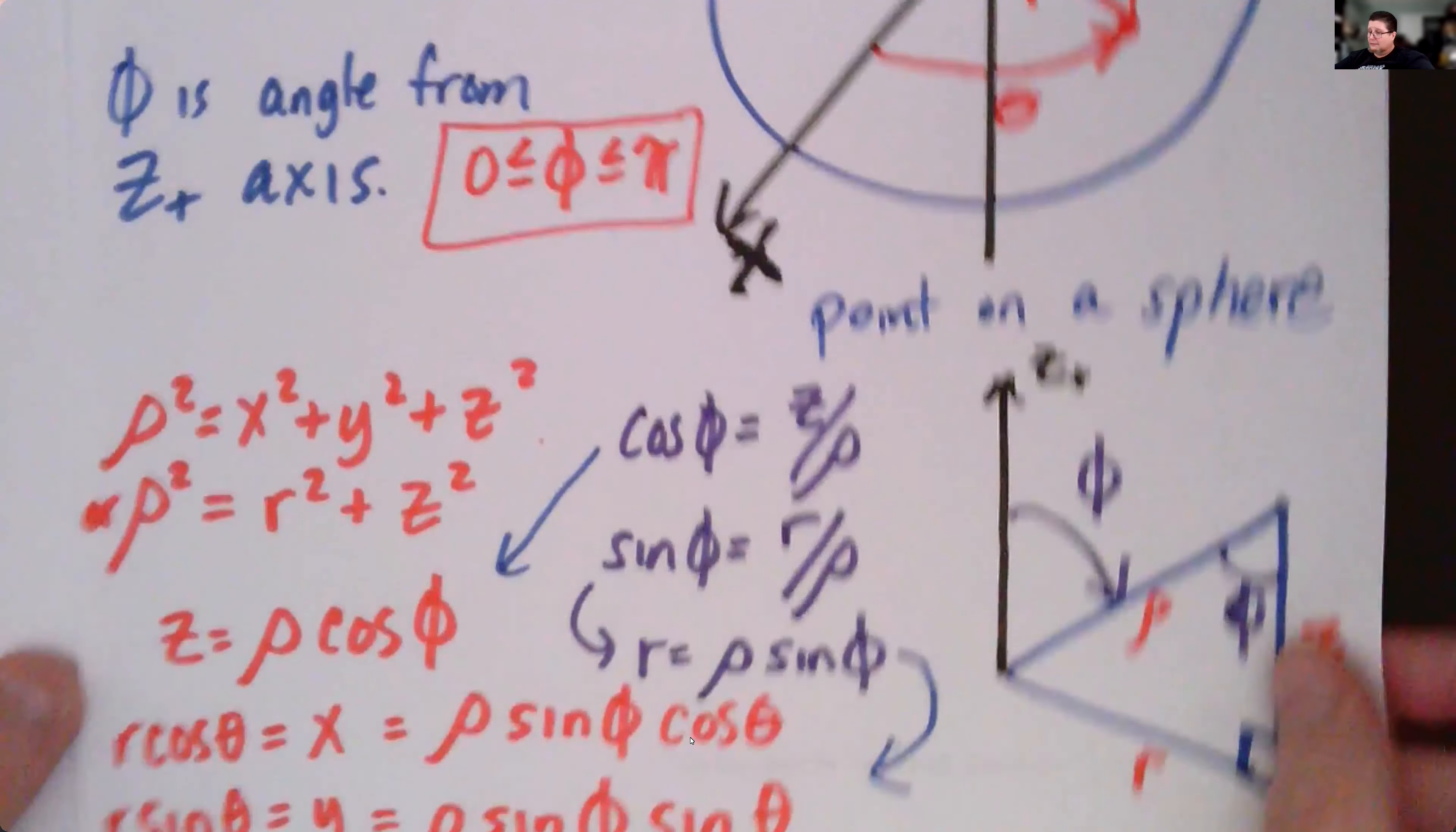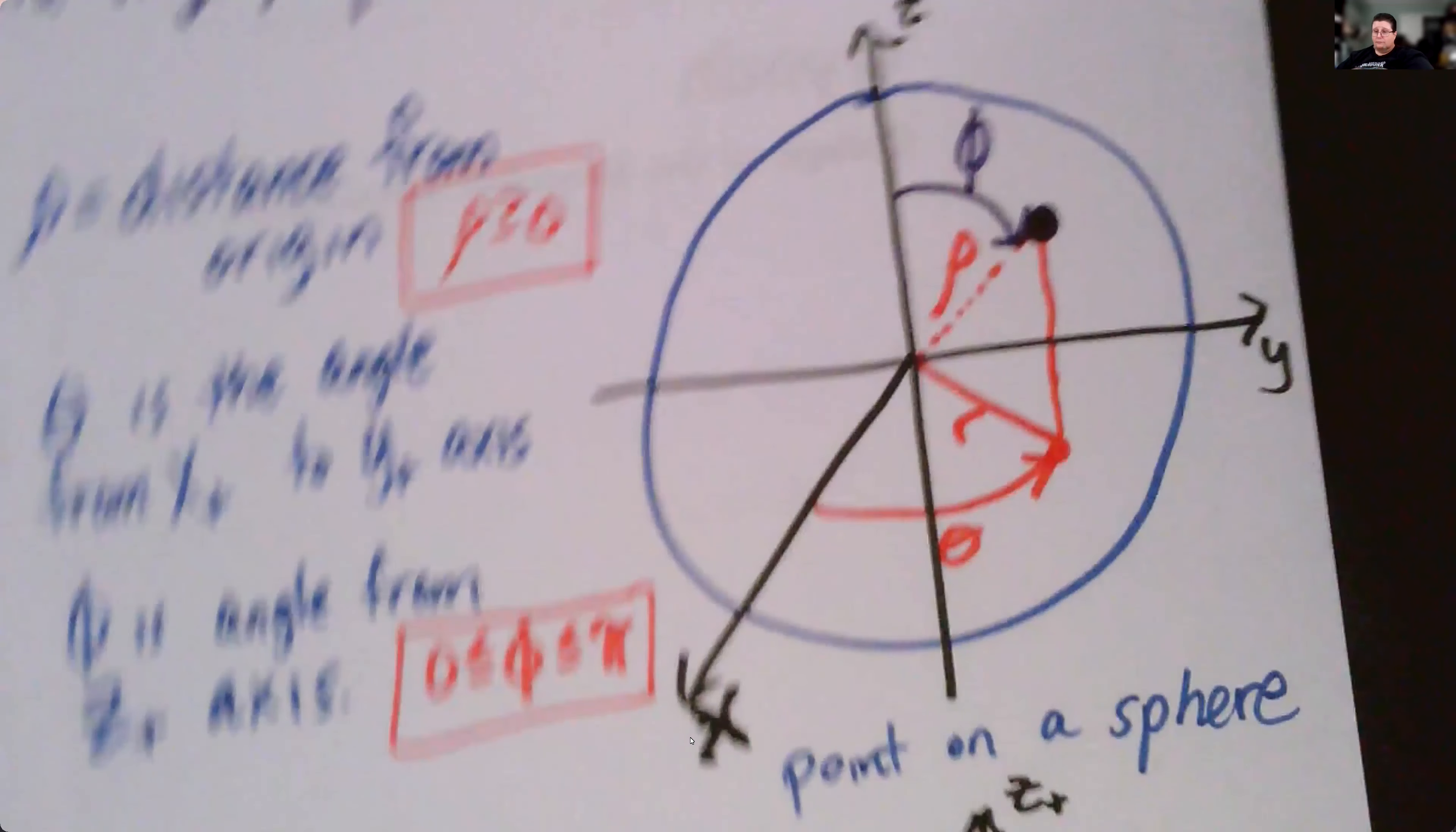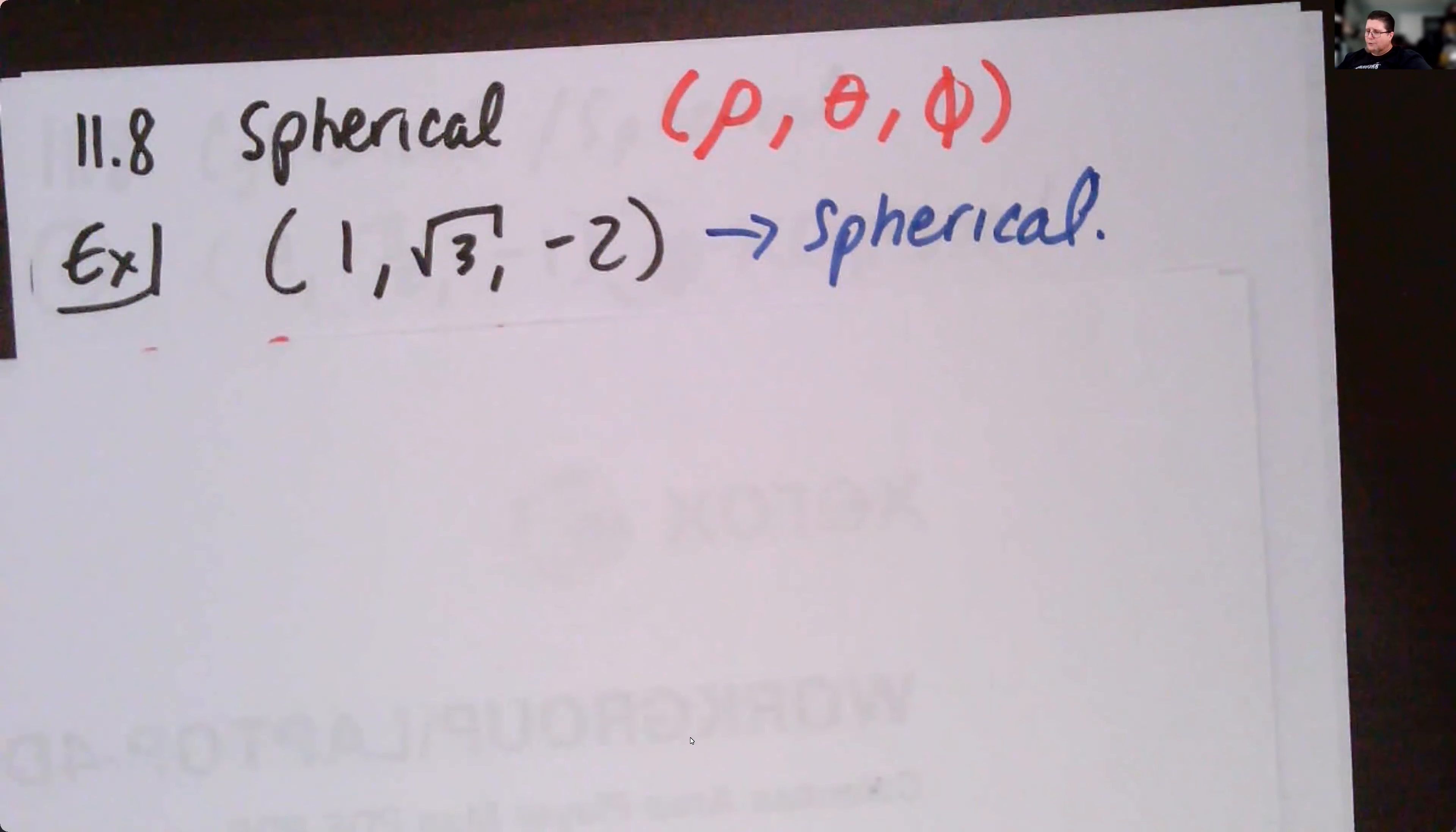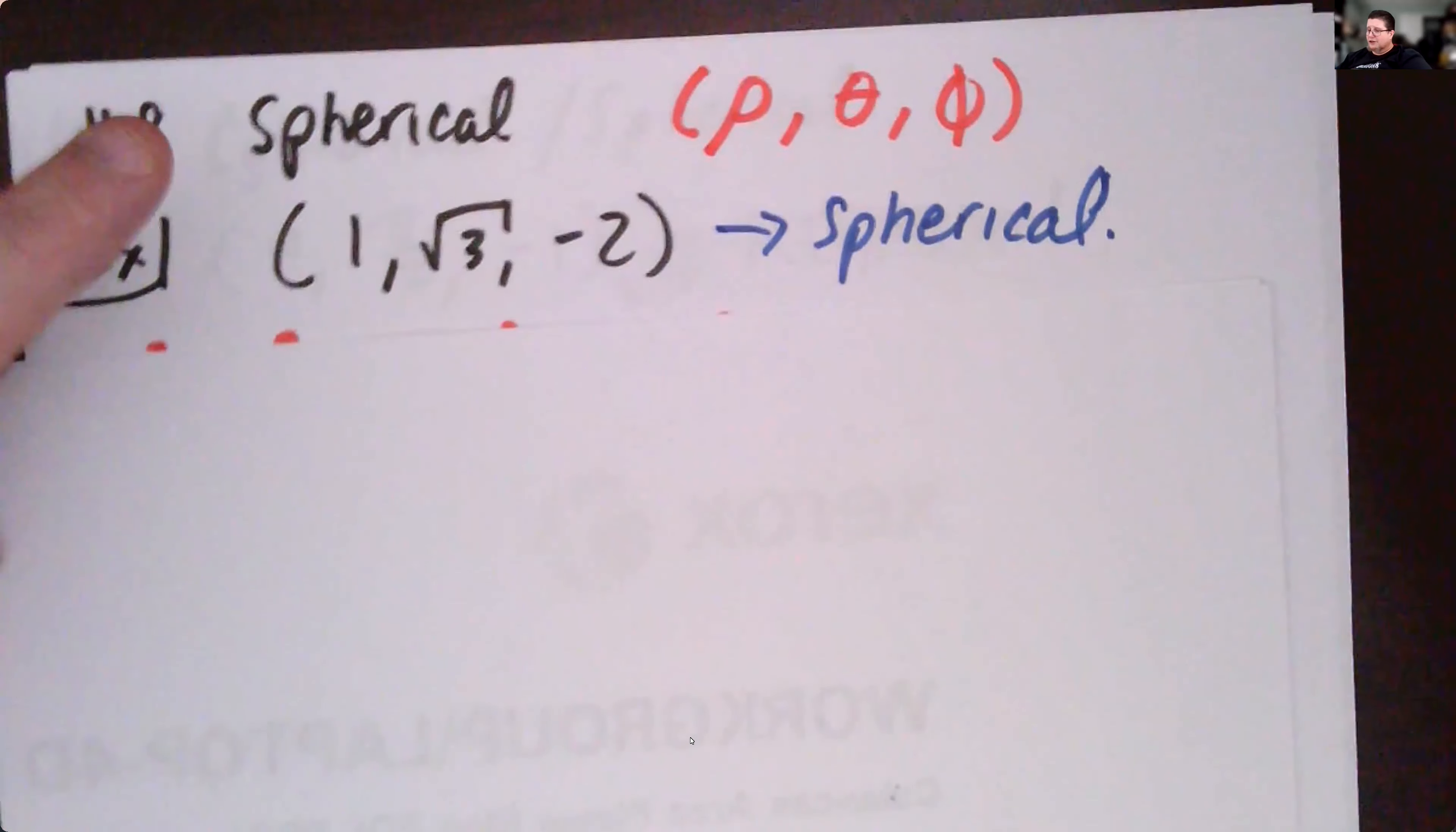Let's take a look at doing that in some problems. So let's start off with one, root three, negative two in the Cartesian and convert it to spherical.